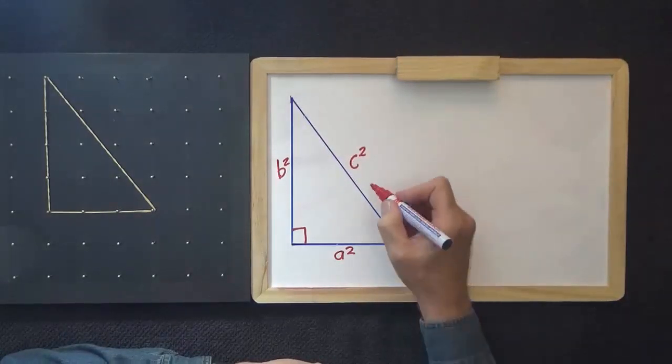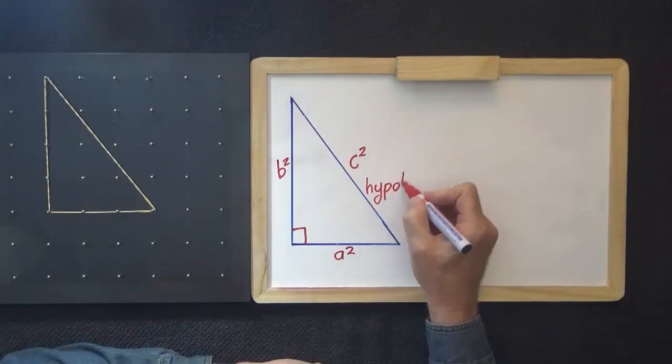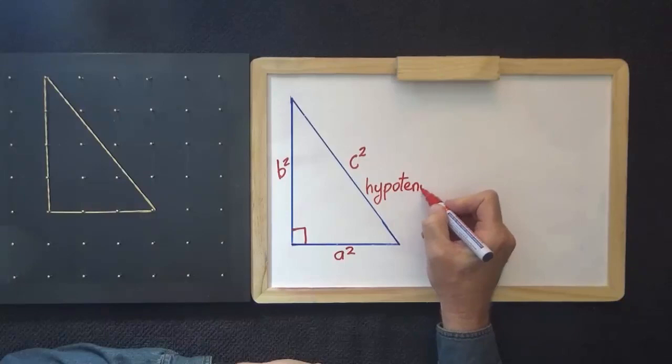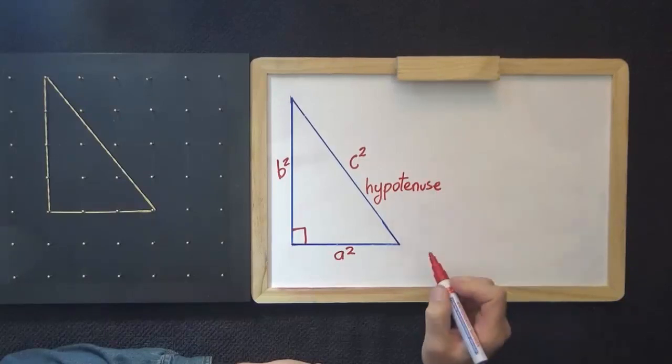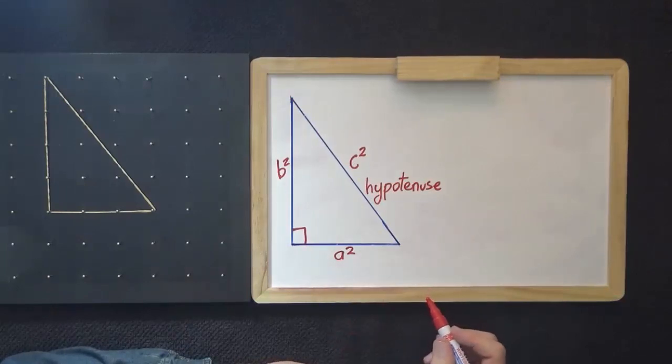This is the hypotenuse, H-Y-P-O-T-E-N-U-S-E. It's always the longer side, the one opposite the right-angle.